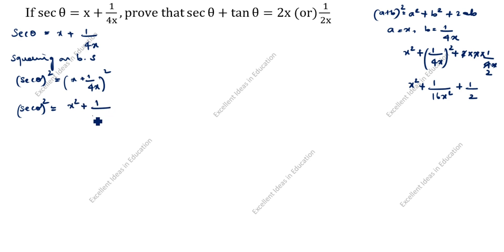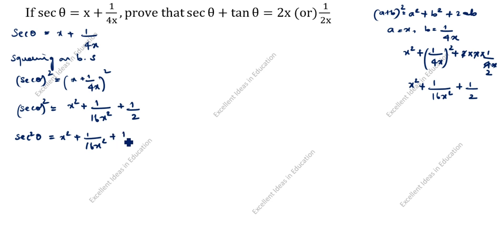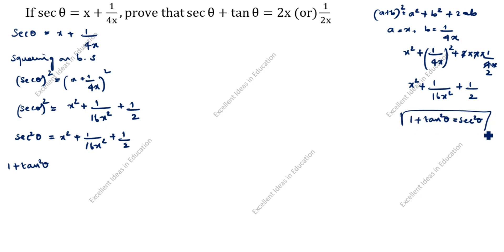We write secant squared theta as x square plus 1 by 16x square plus 1 by 2. Now applying the identity: 1 plus tan squared theta equals secant squared theta. So 1 plus tan squared theta equals x square plus 1 by 16x square plus 1 by 2.